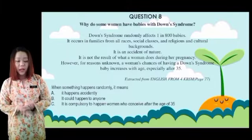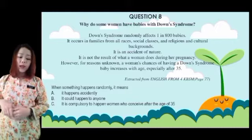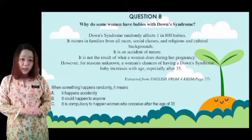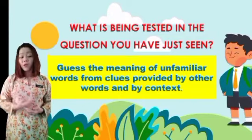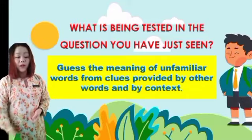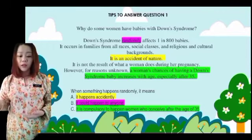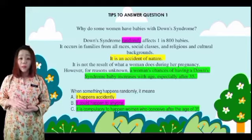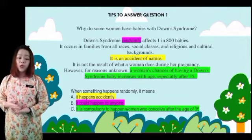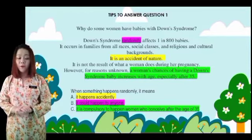For our next question, it's about women who have babies with Down syndrome. The question asks: when something happens randomly, it means? This tests whether you can guess the meaning of unfamiliar words from clues provided by other words and by context. Option A: it happens accidentally. From the text, it is an accident of nature, but it doesn't mention anything about randomly. Therefore, option A is incorrect. Option B: it could happen to anyone. This meaning of 'randomly' matches what we can see from the text. Therefore, option B is correct.